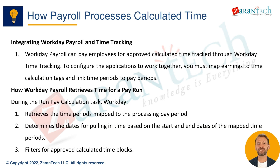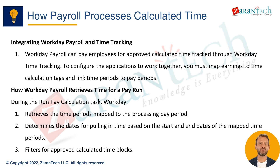If processing a sub-period, Workday looks for time on or after the sub-period start date, and on or before the earlier of the sub-period end date or time period end date. For each earning, Workday retrieves approved time with matching calculation tags.